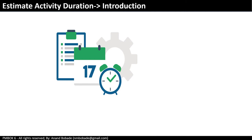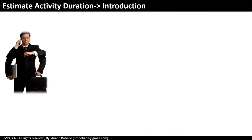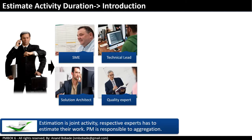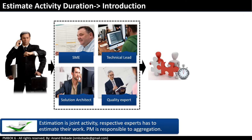Estimation is a very generic word and gets interpreted in different ways by different stakeholders. Clarity around estimation and roles and responsibilities to estimate are very critical for project planning. One of the key questions is: who should do the estimation? Is it the project manager's job? The answer is no. Estimation is a joint activity and the respective expert has to estimate their work. Experts can be subject matter experts — on a software project, it can be a technical lead or solution architect, internal or external. The project manager is responsible to aggregate the estimates.